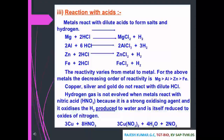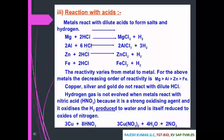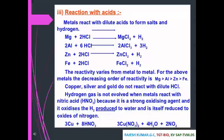Reaction with acids: metals react with dilute acids to form salt and hydrogen. For example, Mg + 2HCl gives MgCl₂ + H₂. The reactivity varies from metal to metal; the decreasing order of reactivity is Mg, Al, and iron. Copper, silver, and gold do not react with dilute HCl. Hydrogen gas is not evolved when metals react with nitric acid (HNO₃) because it is a strong oxidizing agent that oxidizes the H₂ produced to water.